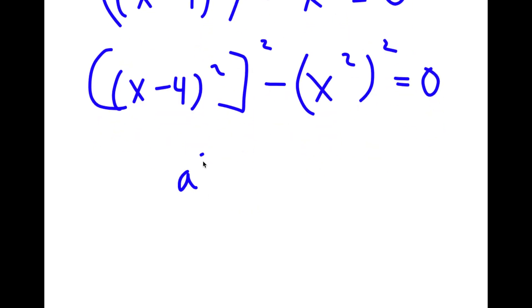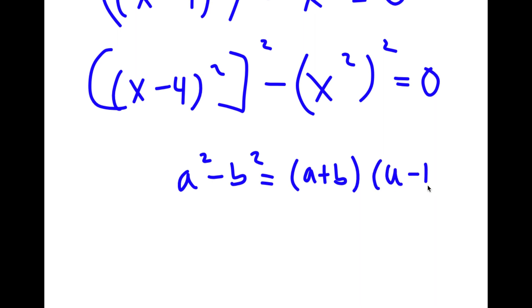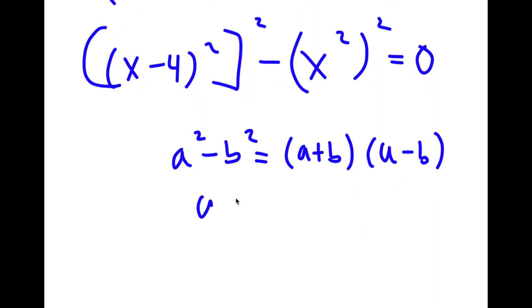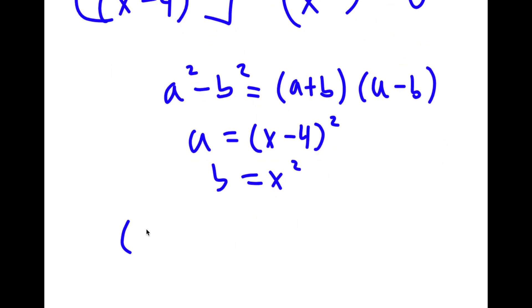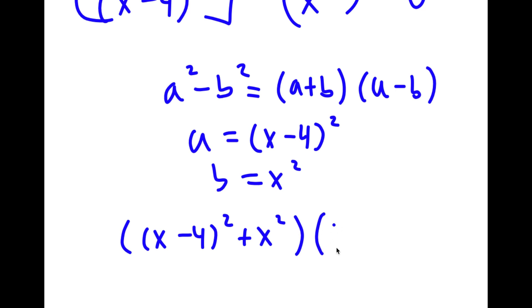Now if I have something in the form a squared minus b squared, this is equal to (a plus b) times (a minus b). So in this case, a is (x minus 4) squared and b is x squared. So now I have (x minus 4) squared plus x squared, times (x minus 4) squared minus x squared.